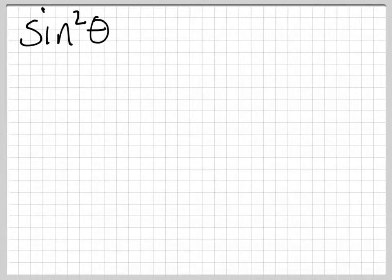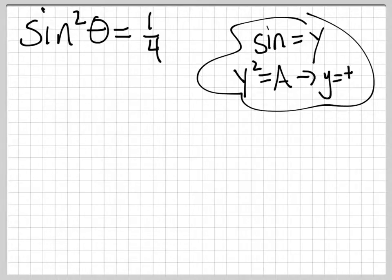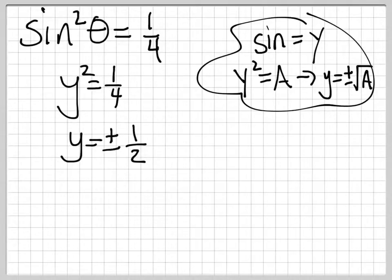When is sine squared of theta equal to a quarter? Well, we remember a couple of things. One is that sine is going to be our y value, and that if y squared equals a, then y equals plus or minus radical a. So when we replace sine with y, we get y squared equals one quarter. So y has to equal plus or minus one half, which is the square root of a quarter.